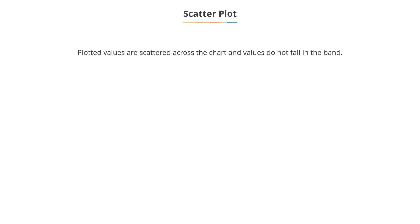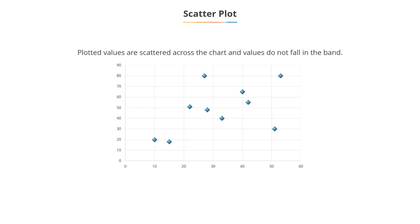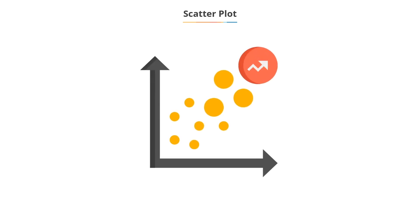In the below given plot, the plotted values are scattered across the chart and values do not fall in a band. In such cases, there is no relationship between the variables. The scatter plot chart or scatter diagram will be discussed in greater detail in the lesson on correlation.